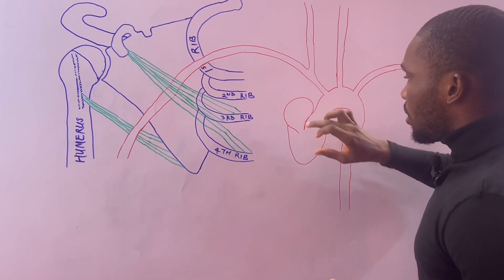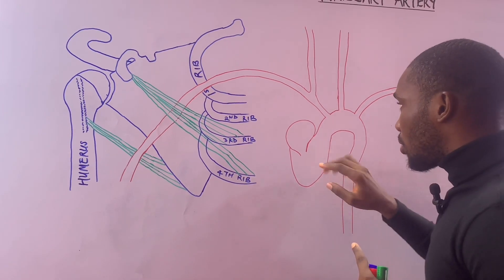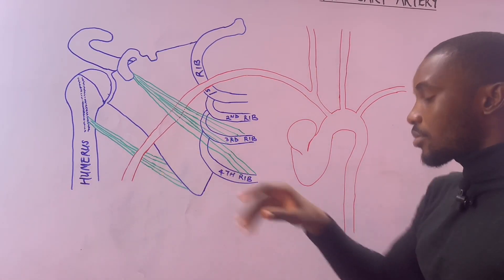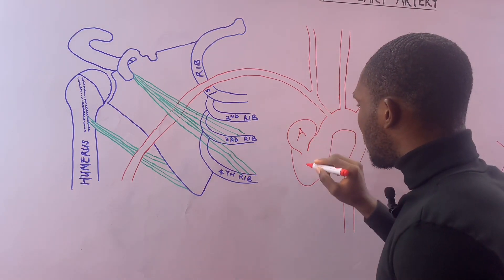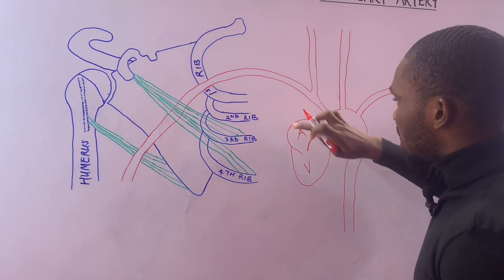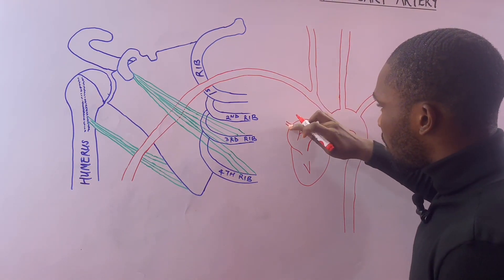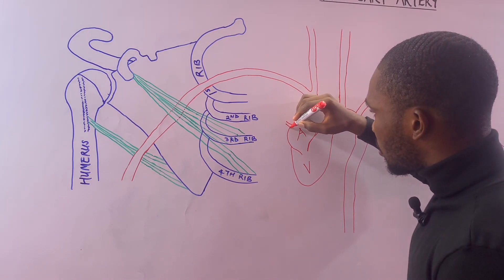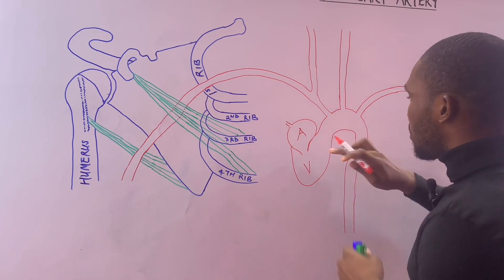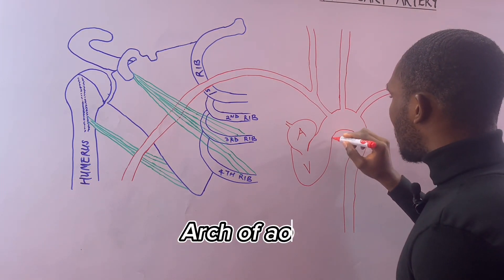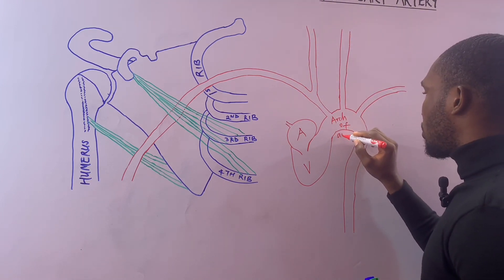I'll describe the circulation from the left side of the heart — oxygenated blood — to the axilla. Blood enters the left atrium from the lungs, moves to the left ventricle, and then moves into the arch of aorta.